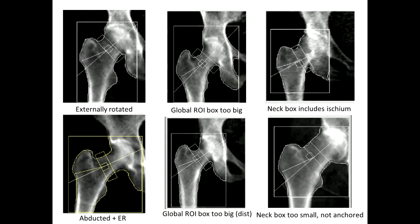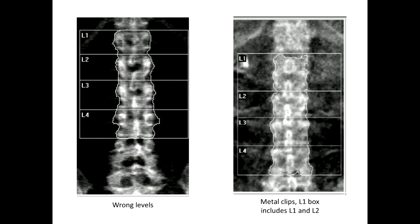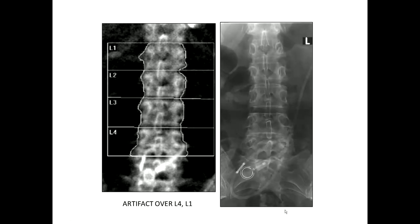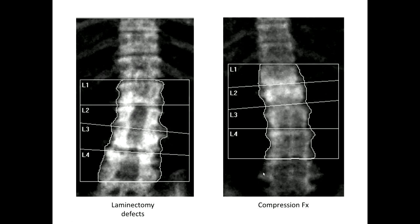Many mistakes can occur in terms of patient positioning and ROI placement and these can significantly affect the measured bone mineral density — here are some examples in the hip. Errors can also occur in spine DEXA, including misidentifying the L1 through L4 levels, including more than one level in a region of interest, including a level with an artifact, or including levels affected by surgery or a compression fracture.